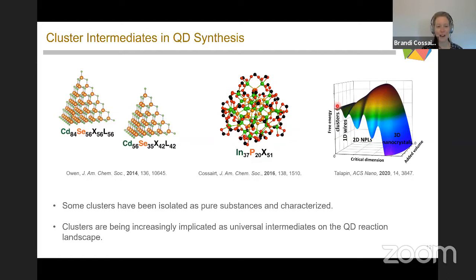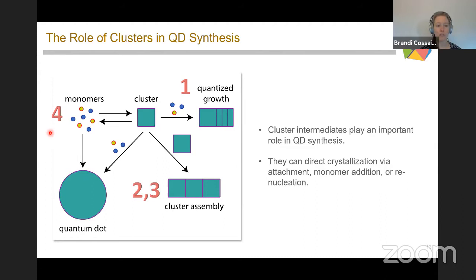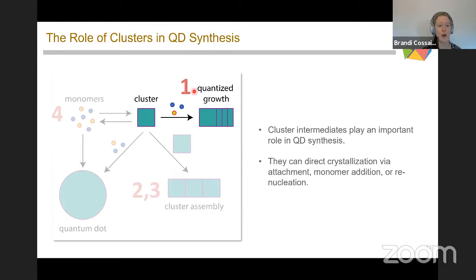The thing we want to address today is how do these clusters convert to larger nanocrystals? Here's my organization for the rest of this talk. We're going to go through four case studies looking at the conversion of cluster intermediates to larger nanocrystals: first, quantized growth or layer-by-layer growth, where you start with a cluster seed and grow material one layer at a time; second, cluster assembly, where you grow nanostructures by attachment of individual clusters; and a fourth type involving dissolution or partial dissolution of your cluster and renucleation to give quantum dot material.